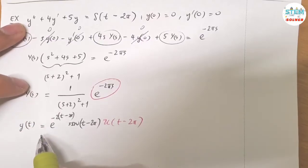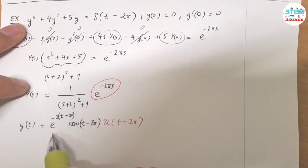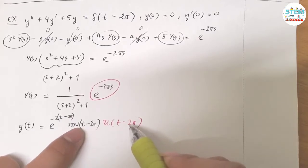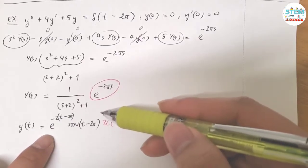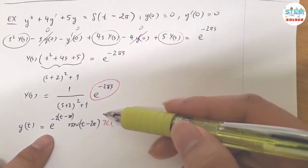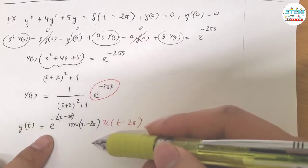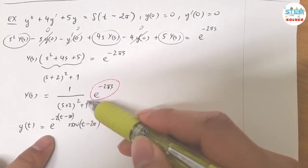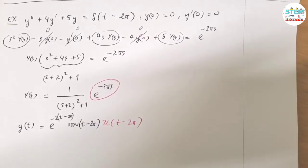So your final solution will be e to the negative 2 times (t-2π) times sine of (t-2π) times U of (t-2π). So all of the t's have to match up. And you want to make sure if you get this right or wrong. Well, you just find the Laplace transform of this one and it should definitely give you this one. So that's your answer. That's it.